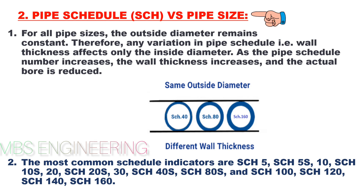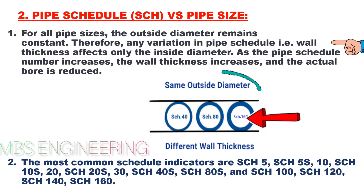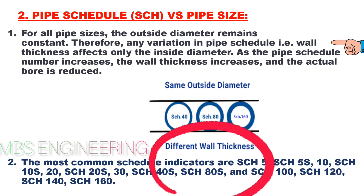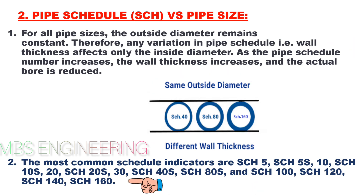Next, we will understand pipe schedule and pipe size. For all pipe sizes, the outside diameter remains constant. Therefore, any variation in pipe schedule — the wall thickness — affects only the inside diameter. As the pipe schedule number increases, the wall thickness increases and the actual bore or inside diameter is reduced. The most common schedule indicators are Schedule 5, 5S, 10, 10S, 20, 20S, 30, 40, 40S, 80, 80S, 100, 120, 140, and 160.